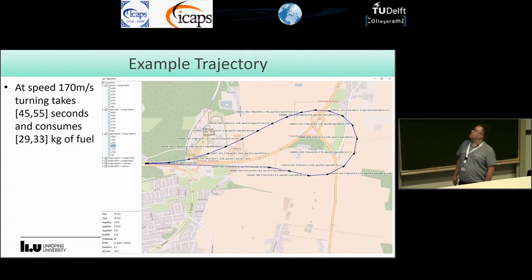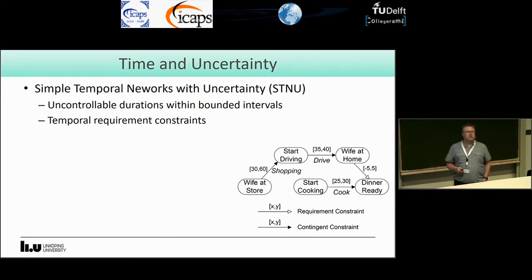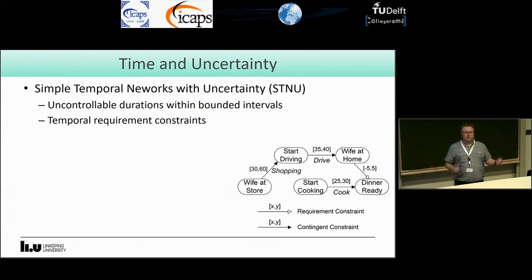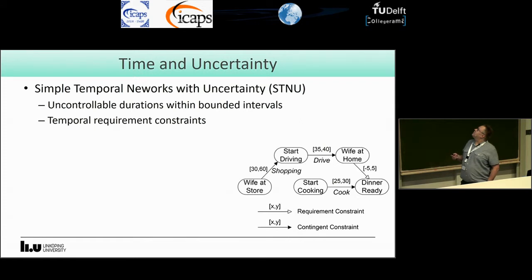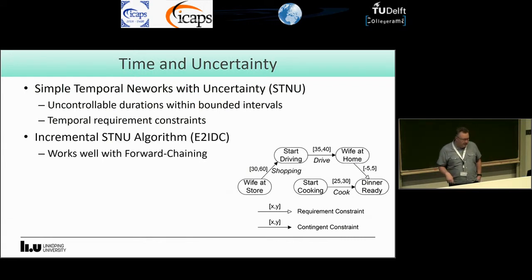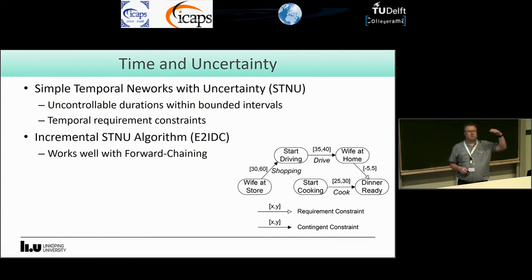When we want to put this into the planner, we note that we have uncontrollable bounded intervals, so it makes sense to use simple temporal networks with uncertainty (STNUs), since this formalism is built upon uncontrollable durations with bounded intervals. This also gives us the temporal requirements to fit time windows and intervals. In the planner we chose to integrate an incremental STNU algorithm called E2IDC, which works very well with the forward chaining of the planner — as the plan incrementally builds, the STNU incrementally builds too, so they are in sync.